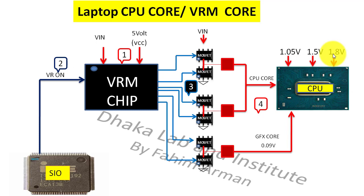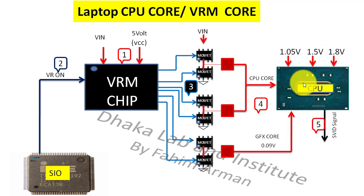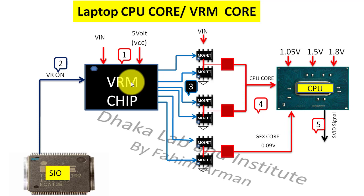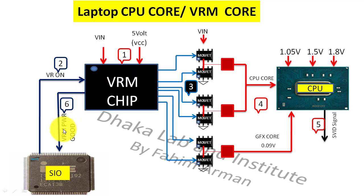All voltages will be ready, and when the CPU provides the HVAD signal to the VRM chip, the VRM chip will provide the last signal — the VRM power good. If the VRM chip provides VRM power good, then the section will be complete and the performance will be complete.